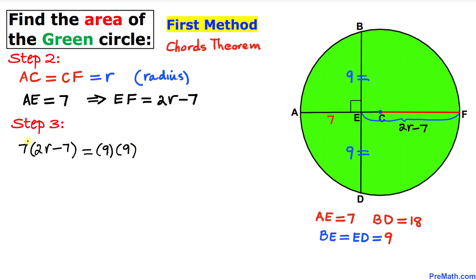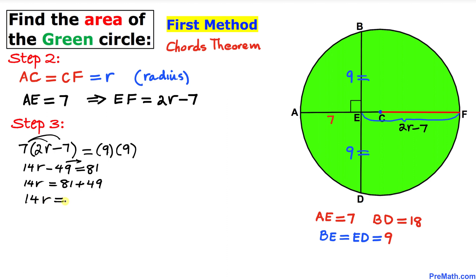Distributing gives us 14R minus 49 equals 81. Moving 49 to the right-hand side: 14R equals 81 plus 49, so 14R equals 130. Dividing both sides by 14, R reduces to 65 over 7. That is our radius.